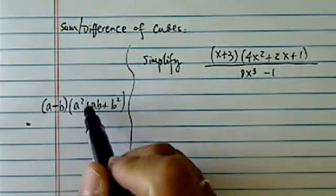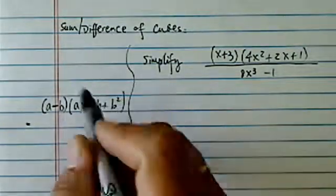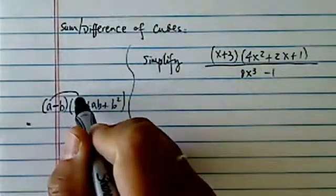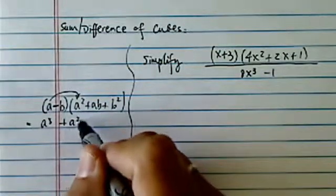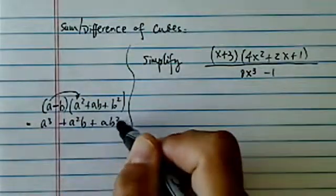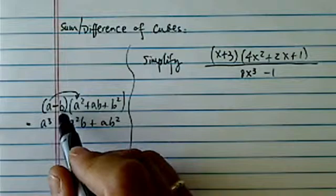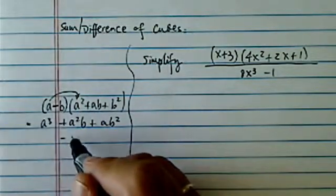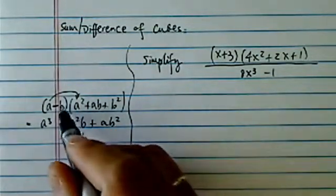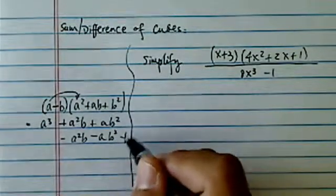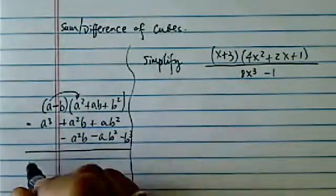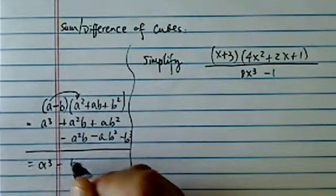We have a minus b times a squared plus ab plus b squared. There's no two over there, that's important actually. We have a cubed plus a squared b plus ab squared, minus a squared b, minus ab squared, and then minus b cubed. And what you end up with actually is a cubed minus b cubed.